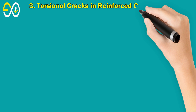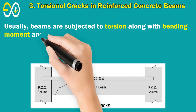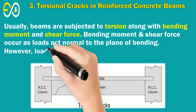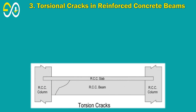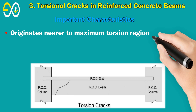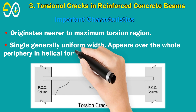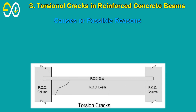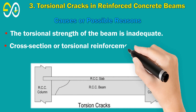3. Torsional Cracks in Reinforced Concrete Beams. Beams are usually subjected to torsion along with bending moment and shear force. Bending moment and shear force occur as loads act normal to the plane of bending; however, loads away from the bending plane will cause torsional movement. Important Characteristics: Originates nearer to the maximum torsion region; generally single with uniform width appearing over the whole periphery in helical form. Causes: The torsional strength of the beam is inadequate; cross-section or torsional reinforcement is insufficient.